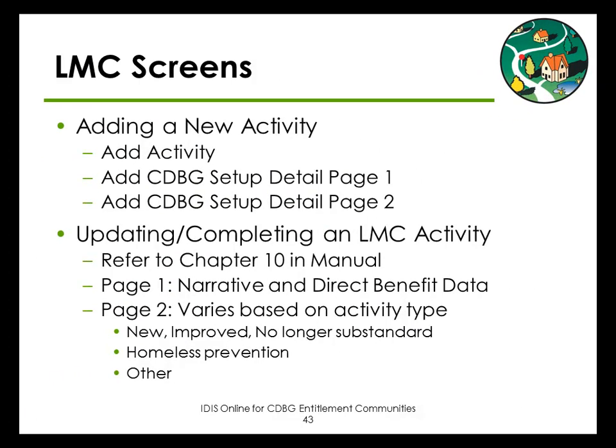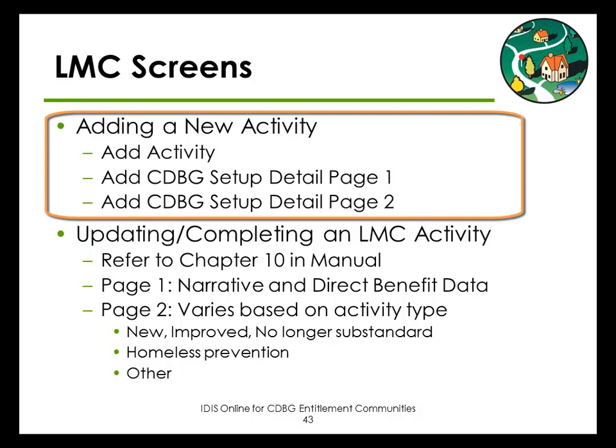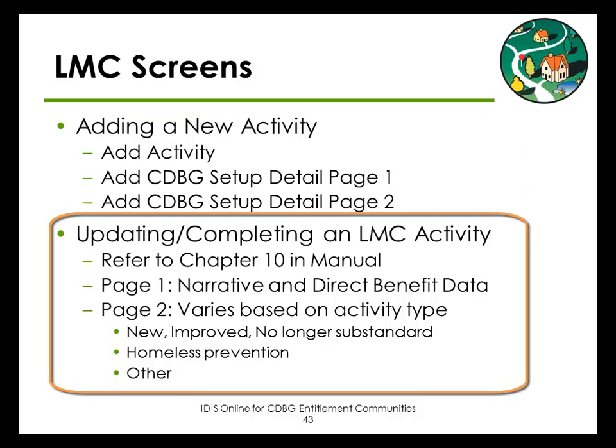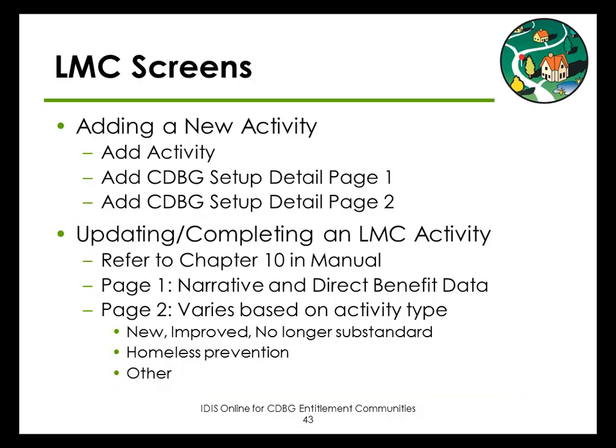Here is a list of the screens we will need to complete when adding and completing a public service activity. To add a service activity that will meet the limited clientele national objective, we need to complete three screens. Refer to Chapter 3, Activity Setup, in your manual if you want to follow along. To update or complete a limited clientele activity, we will need to complete two screens of data under CDBG accomplishment detail. Chapter 10 of your manual explains what data is required for each type of public service. For the data entry portion of this module, we will be using Case Study 4. Take a moment to read through Case Study 4, answer the discussion questions, then log into the UAT version of IDIS and follow along.